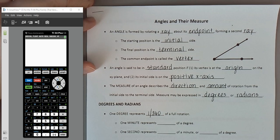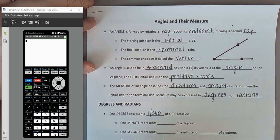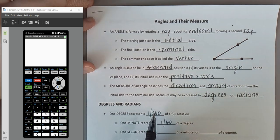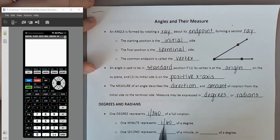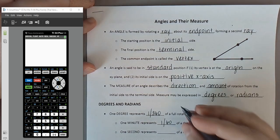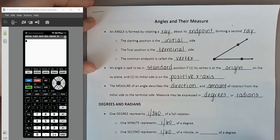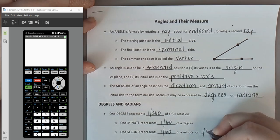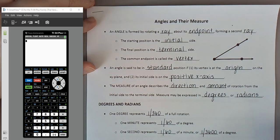We can talk about degrees in a couple of different ways: decimal degrees, or smaller units within degrees. One minute represents 1/60th of a degree — if you break a degree into 60 parts, one of those parts is a minute. You can break a minute further into seconds: one second is 1/60th of a minute, or 1/3600th of a degree, since 60 times 60 gives us 3,600.